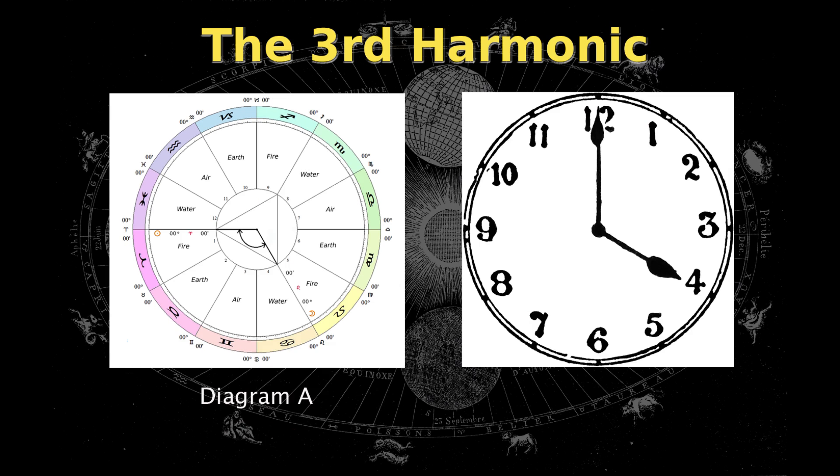It typically happens when these two planets are four signs away. Because of that, they'll be in the same element, which makes it really easy to see. As an example, look at diagram A. The Moon in Leo is four signs away from the Sun in Aries. It's easy to see because you can count out that four signs, and they're in the same element.